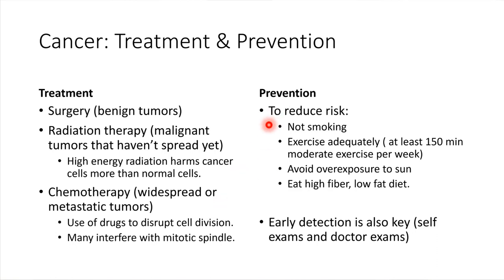Smoking is something that can lead to a lot of different types of cancers, not just lung cancer, but influences a lot of things in the body — so not smoking is definitely positive. Exercising adequately is also important. The recommendation is at least 150 minutes of moderate intensity exercise per week — moderate intensity would be like a brisk walk, and it's okay to spread that out, like a 20-minute walk every day, or 50 minutes three days a week. Either way, you get the benefit of lowering cancer risk. Avoiding overexposure to the sun and wearing sunscreen is very important for preventing skin cancers.